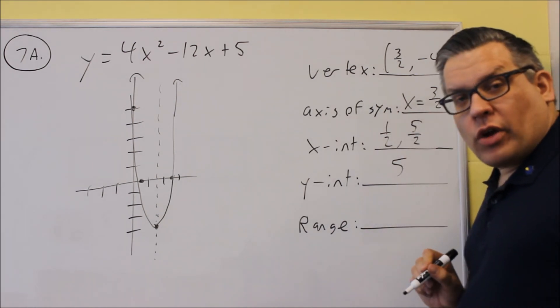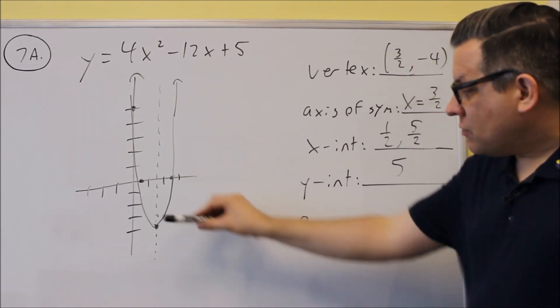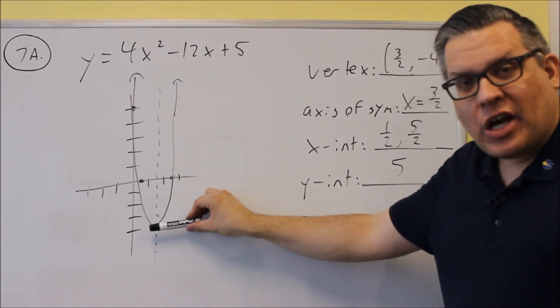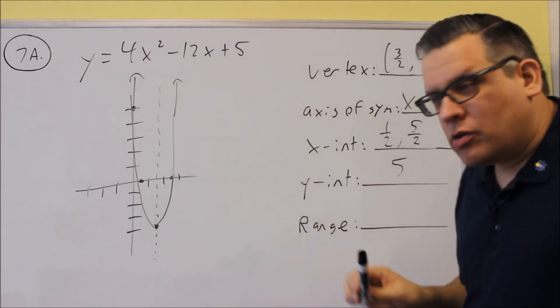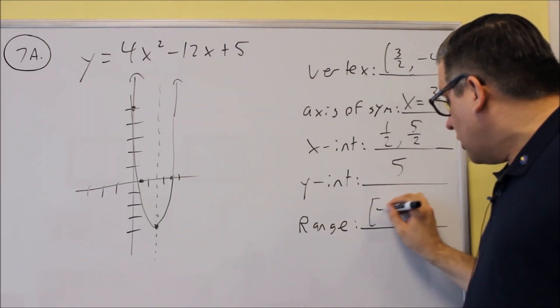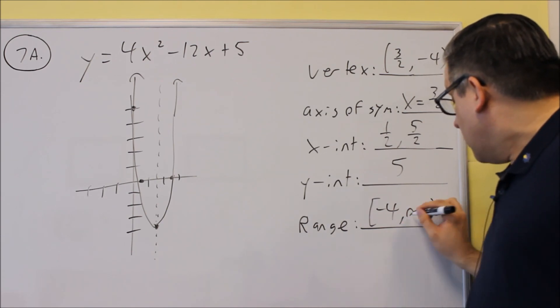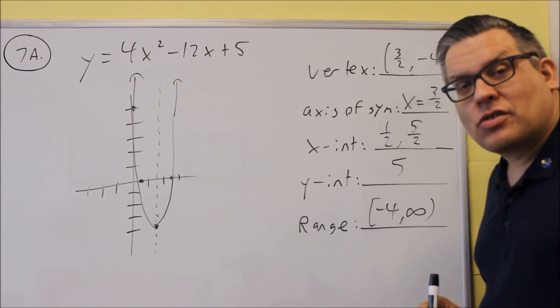Now there's one more thing they want. They want the range. Okay, so the range would be the y values that the graph uses. Now the lowest y value is down here at negative four, and it goes up forever. So my range, I'm going to put a bracket there with negative four, and that's going to go to infinity. It keeps on going all the way up, so this is what y values the graph uses.